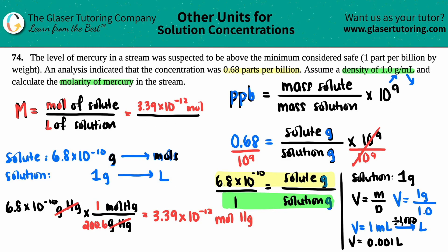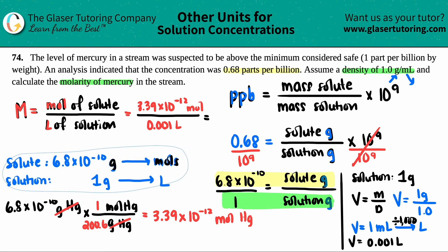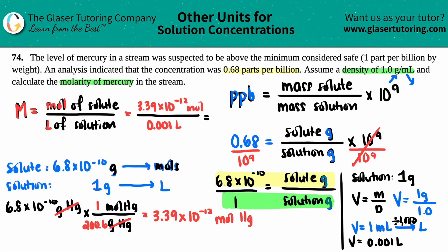Now putting it together: 3.39 × 10⁻¹² moles divided by 0.001 liters = 3.39 × 10⁻⁹ M. That's the molarity — you can write it as capital M or moles per liter. And there you go — that's the molarity of mercury in the stream.